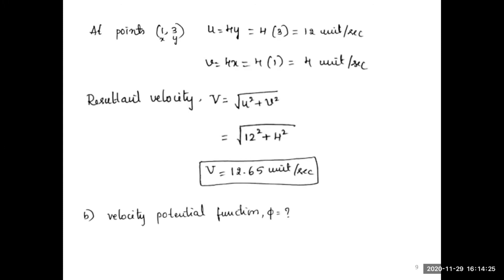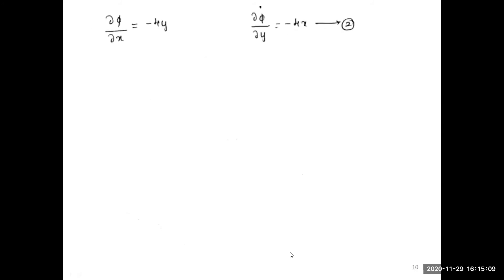For case (b), we need to find the velocity potential function φ. The velocity component equations in terms of φ are: ∂φ/∂x = −u and ∂φ/∂y = −v. Substituting u = 4y and v = 4x, we get ∂φ/∂x = −4y (equation 1) and ∂φ/∂y = −4x (equation 2).